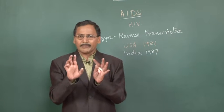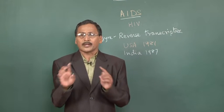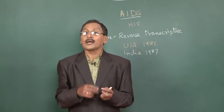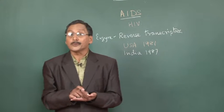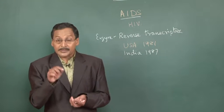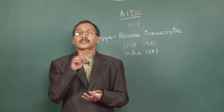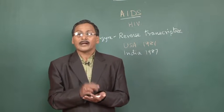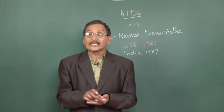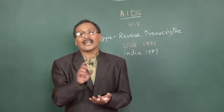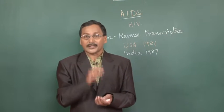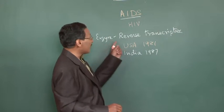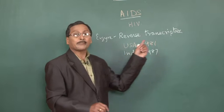It has a very simple structure. There is a round double-wall layer of fatty tissue. Inside that, there is a protein covering, and inside that protein covering is RNA, which contains the enzyme reverse transcriptase.